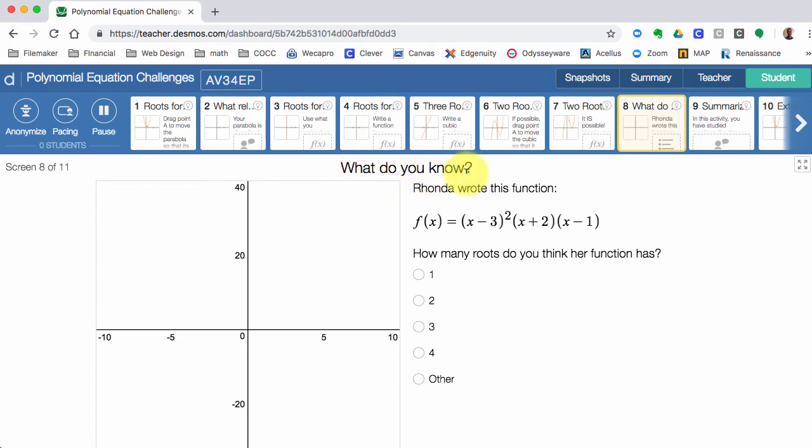Let's take a look at this one. What do we know? Rhonda wrote this function out right here: x minus 3 squared times x plus 2 times x minus 1. How many roots do you think her function has? Well, I've got one at negative 2, I've got one at positive 1, so there's two roots.